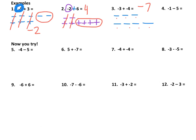In the next problem, the first number we have is negative 1, and the next number we have is negative 5. Again, nothing cancels, so we're going to count up what we have — 1, 2, 3, 4, 5, 6. So the answer here is negative 6.